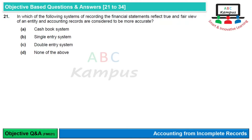Question 21: In which of the following systems of recording do financial statements reflect a true and fair view of an entity, and accounting records are considered more accurate? Cash book system एक ऐसा system होता है जिसमें basically सिर्फ cash का record maintain किया जाता है, बाकि record maintain नहीं होता, तो इसमें business की accurate position नहीं मिल सकती, तो यह हमारा answer नहीं हो सकता।